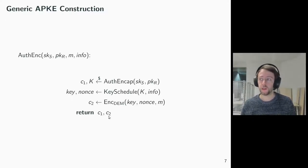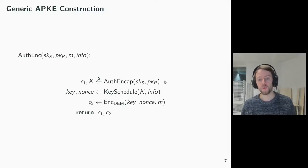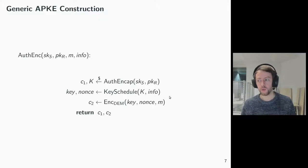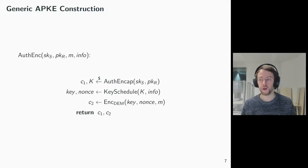As an overview, here is what we prove in this work. We prove that the specific authenticated KEM instantiation of the standard provides certain security guarantees. We prove that the key schedule is a pseudorandom function, and we prove composition theorems saying that given an authenticated KEM with certain security properties, the ACAM-DEM construction provides certain security properties.